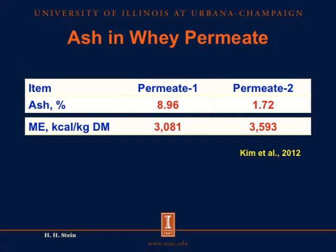First, I'll talk a little bit about ash. Ash is an important nutrient in animal proteins. To illustrate this, we have here two different sources of whey permeate. Permeate 1 contains 8.96% ash, and permeate 2 contains only 1.72% ash. The influence of ash on the concentration of metabolizable energy is quite significant — we have only 3,081 kcal metabolizable energy per kilogram dry matter in the high-ash permeate, whereas the concentration is 3,593 kcal per kilogram dry matter in the low-ash permeate. Clearly, the more ash we have in a feed ingredient, the less energy we have in that ingredient.